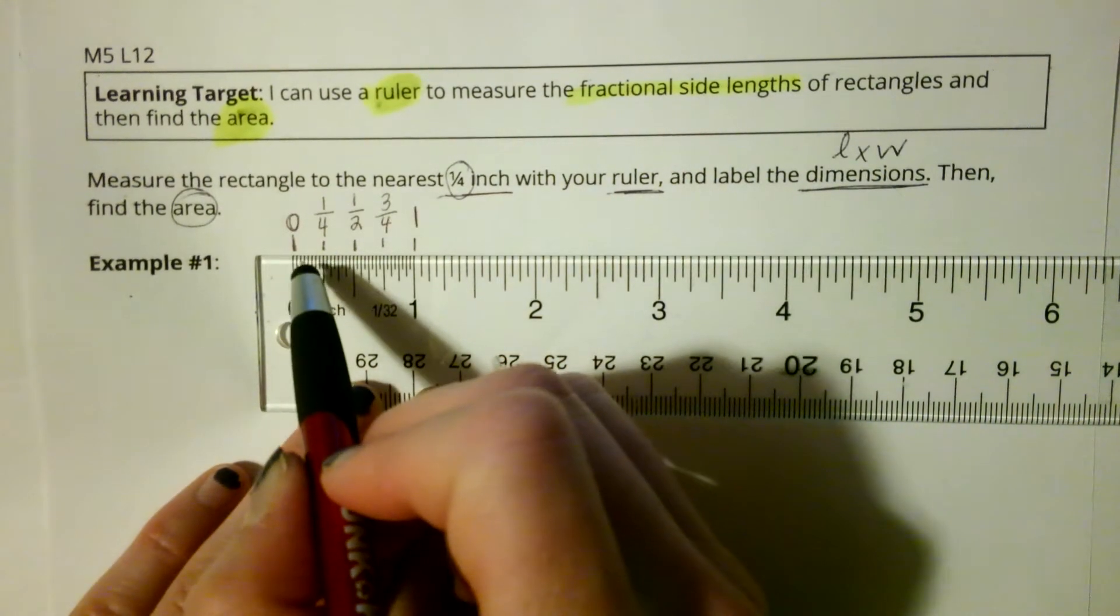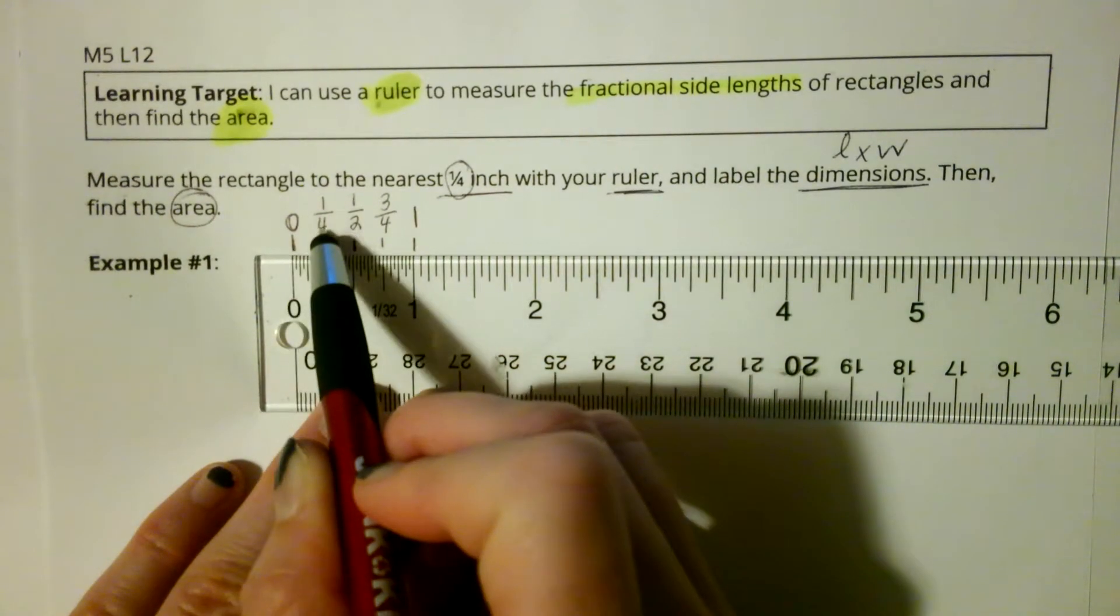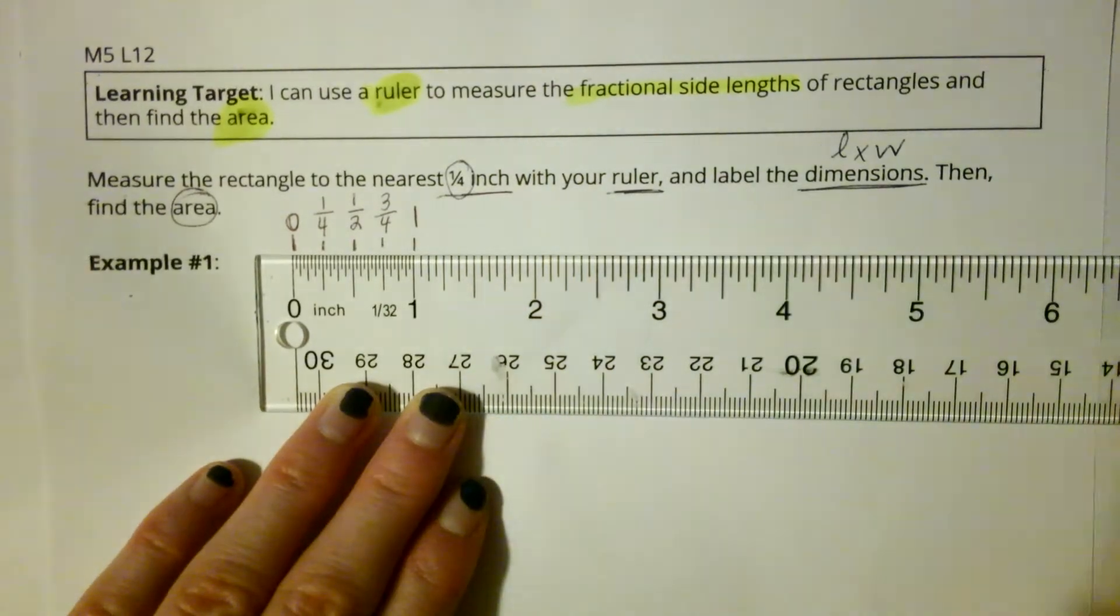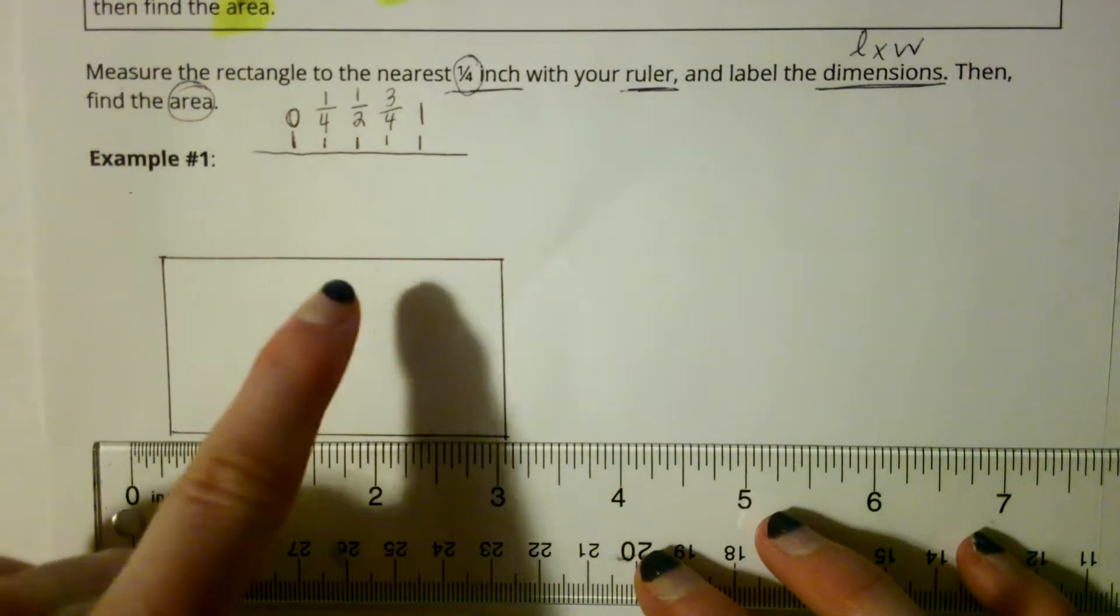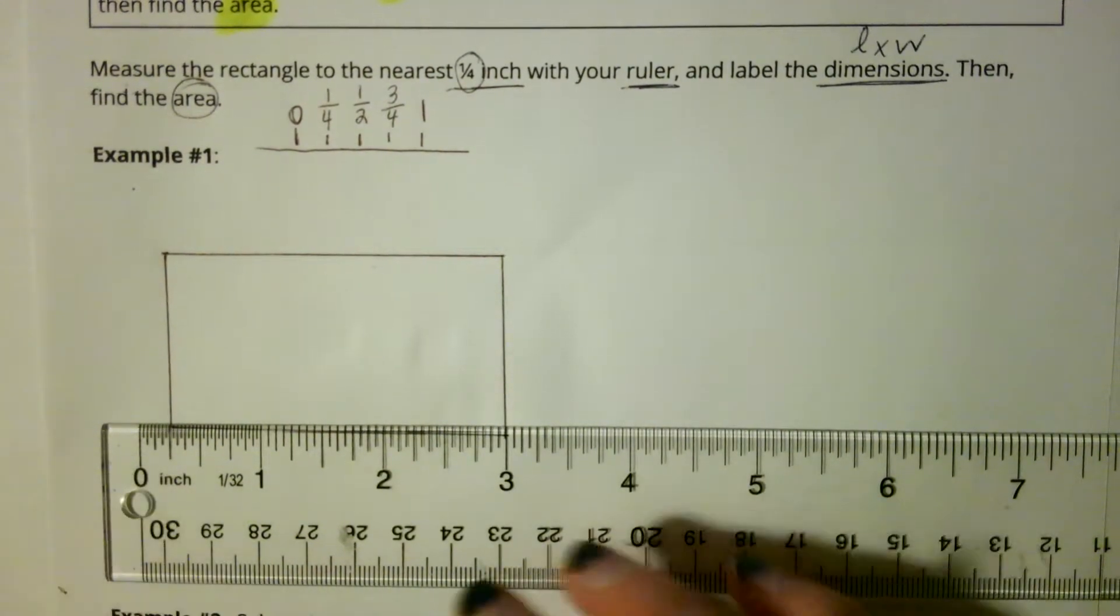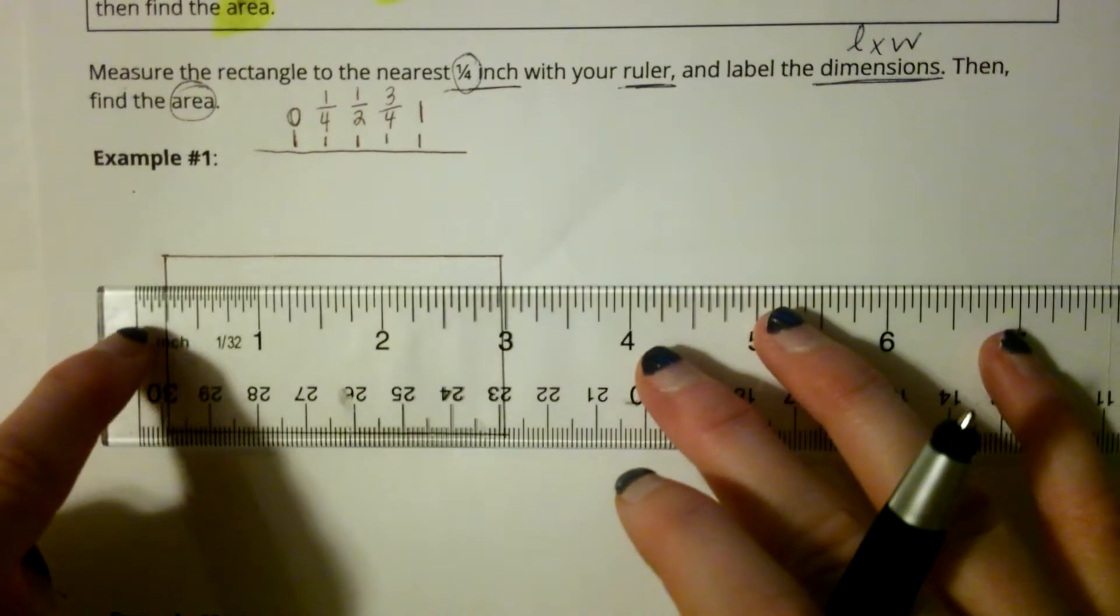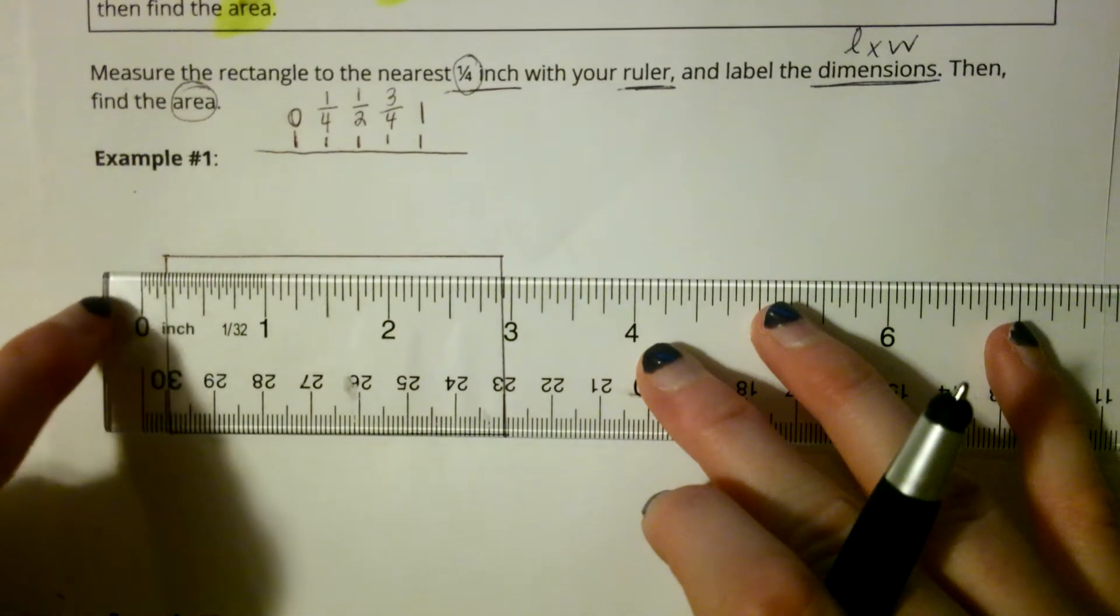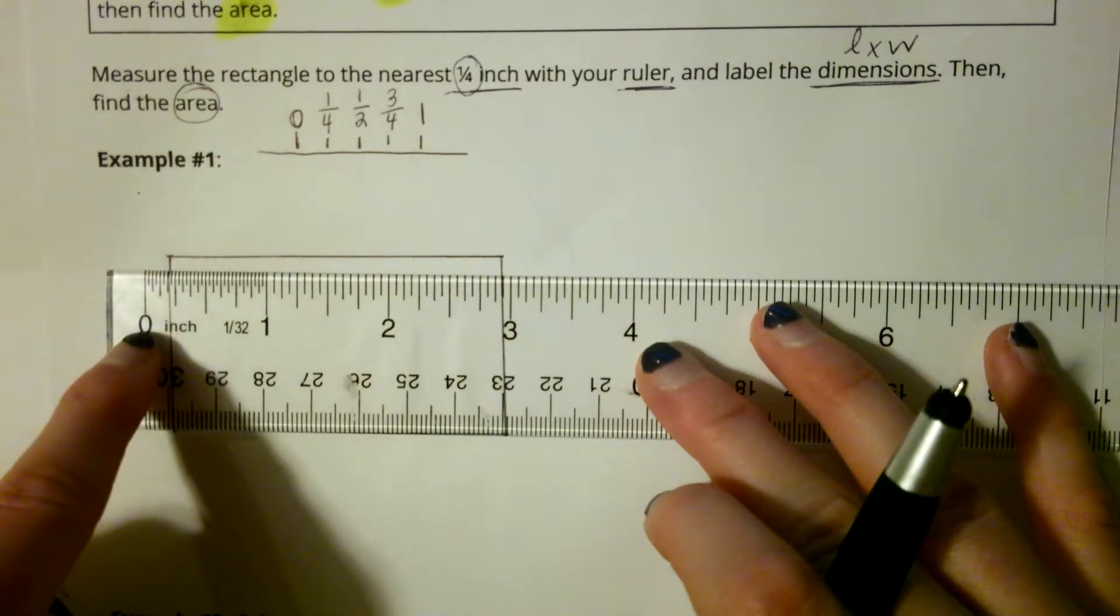So whenever you are going to be measuring today, make sure you're measuring to the nearest quarter inch, which means either to the one-fourth inch, one-half, three-fourths, or whole inch. So we have my ruler here and I have a rectangle that I'm going to measure to the nearest fourth inch. And advice that I have for you is making sure that whenever you're going to measure a line that you always start at the zero tick mark on the ruler, not the end of the ruler. This does not count for our measurement. We have to start at this line where zero begins.